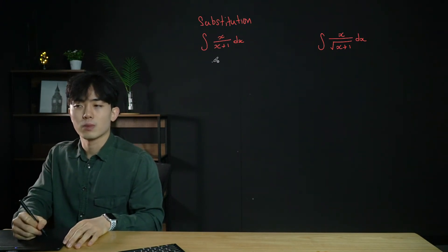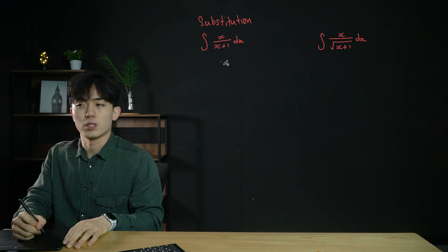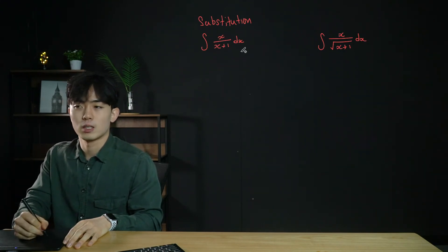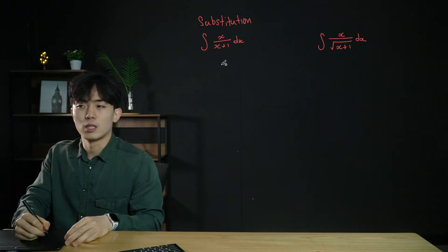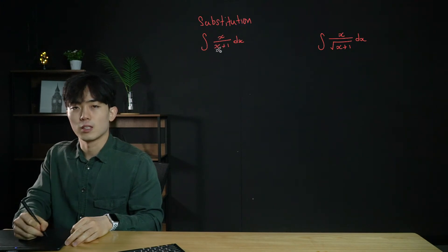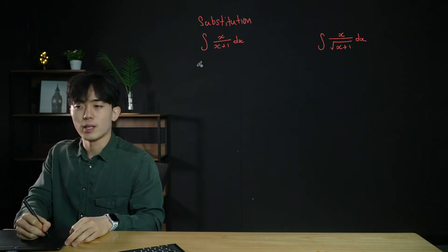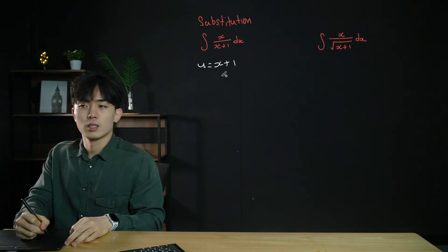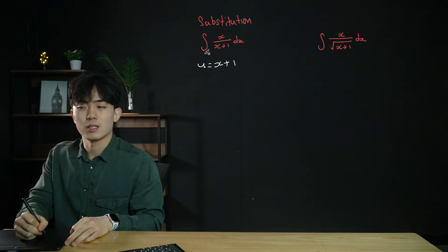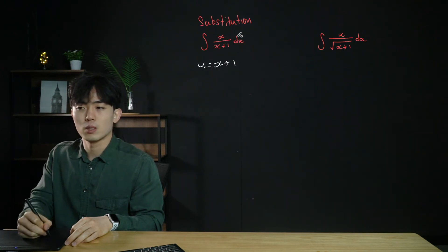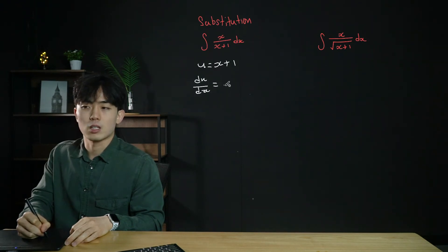That's all the trig integrals. We're now going to look at substitution. In most questions they will give you the substitution, but sometimes they won't. The main goal when finding your own substitution is — if you have a fraction — to reduce the denominator to one term. For example, if we have x over (x+1), we want to reduce x+1 to one term, so we let u equal x+1.